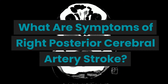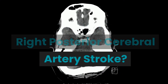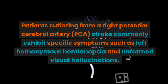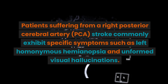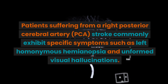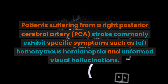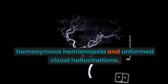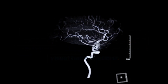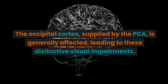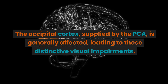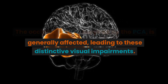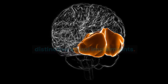What are symptoms of right posterior cerebral artery stroke? Patients suffering from a right posterior cerebral artery, PCA, stroke commonly exhibit specific symptoms such as left homonymous hemianopsia and unformed visual hallucinations. The occipital cortex, supplied by the PCA, is generally affected, leading to these distinctive visual impairments.